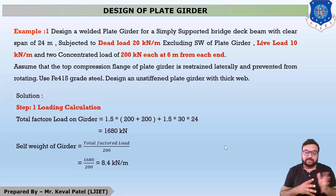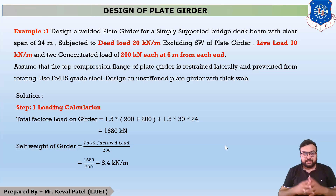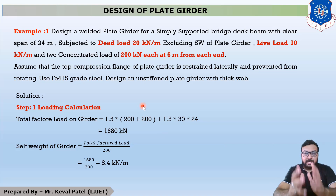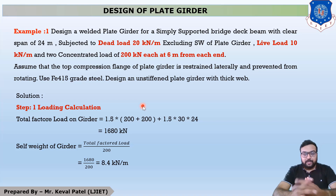In the last lecture, we designed our plate girder section which resists maximum bending moment of 5976 kNm and maximum shear force of 996 kN. In the last lecture, we selected a trial and error section.